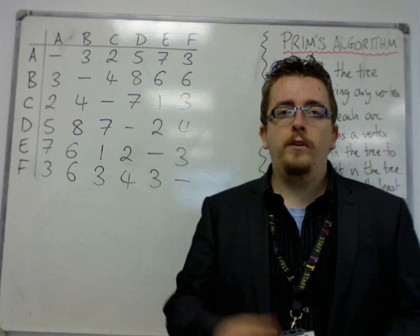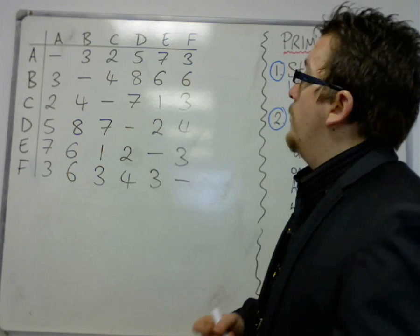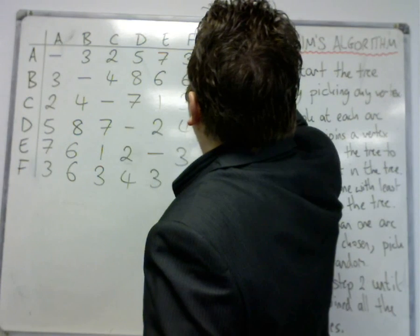Okay, so I'm going to work through a second example of using Prim's algorithm in a matrix. So we're going to start, let's say, start from A again.